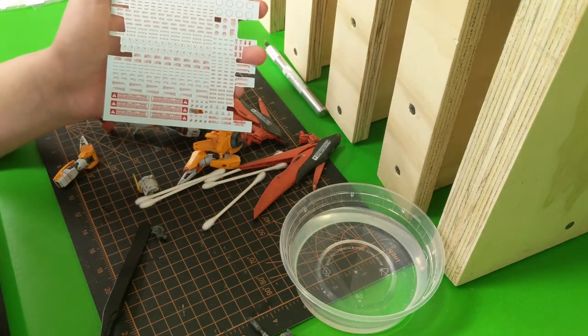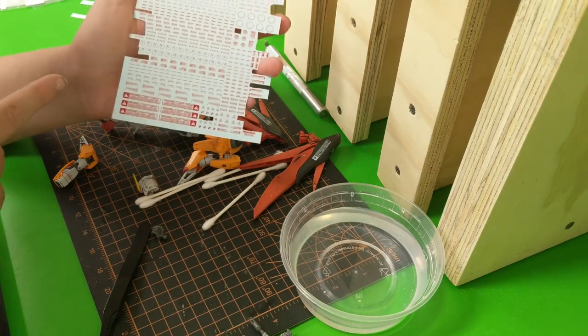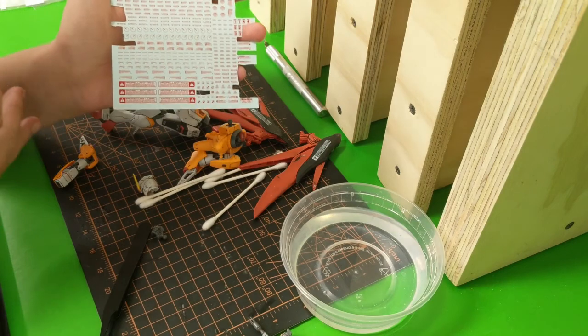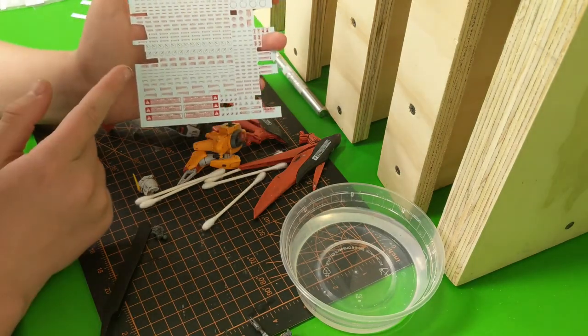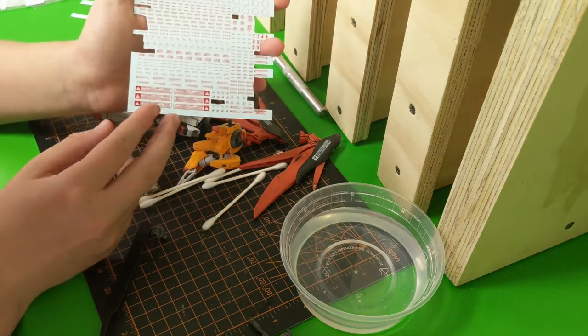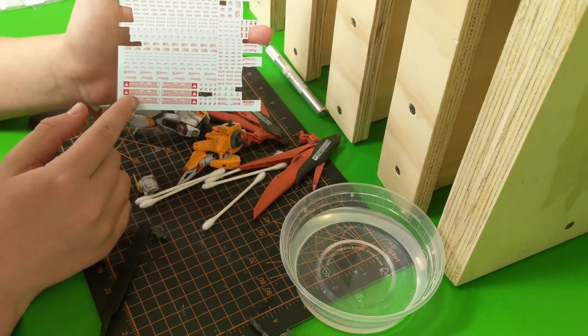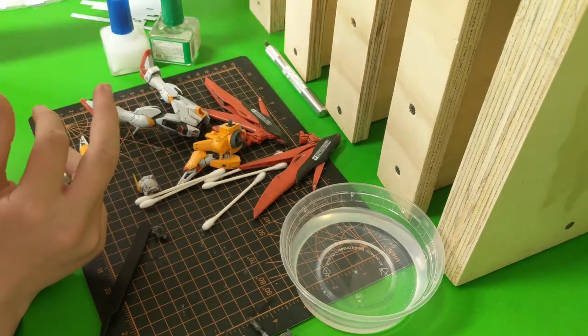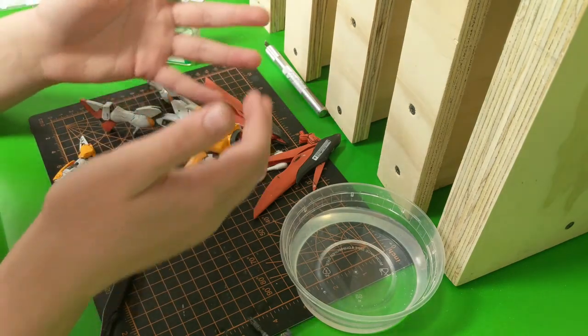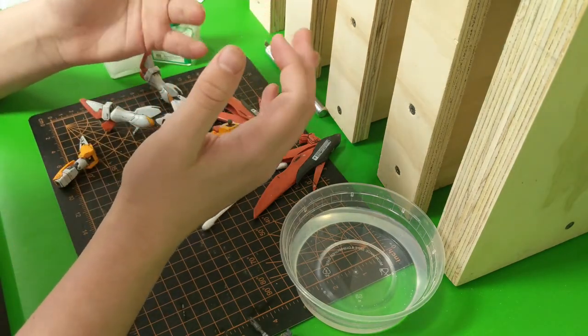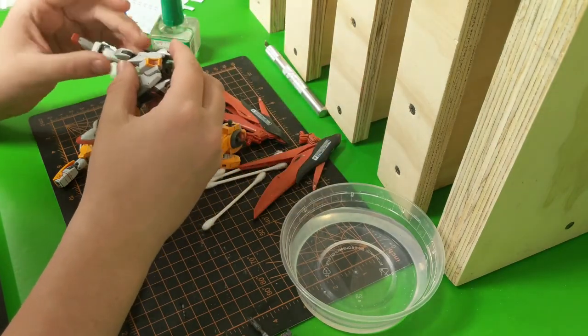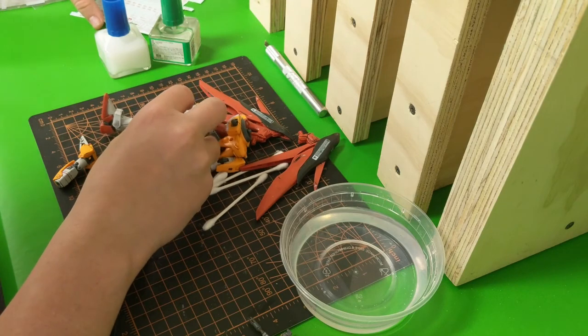One sheet for the 1/144th scale decals will set you back about three or four dollars. At the moment there are only two scales available—1/144 and 1/100. The 1/100 scales are definitely bigger, but when it comes to decals I think it's really just a matter of smaller decal versus bigger decal.